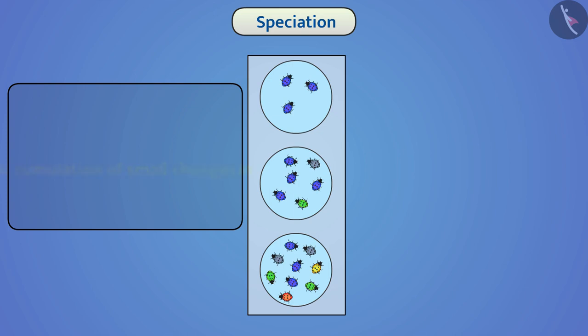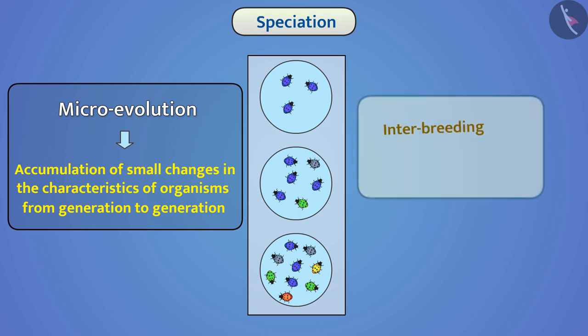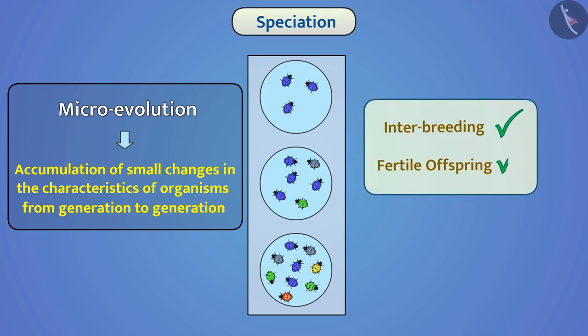In this way, accumulation of small changes in the characteristics of organisms from generation to generation is called microevolution. Microevolution results in small changes to the normal characteristics of the organism, but still different organisms of the same population can interbreed and produce fertile offspring.